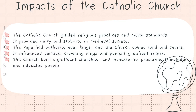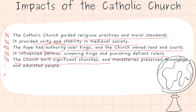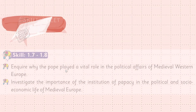The Catholic Church guided religious practice and moral standards, providing unity and stability in medieval society. The Pope had authority over kings, and the church owned land and courts. It influenced politics by crowning kings and punishing defiant rulers. The church also built significant churches and monasteries, preserved knowledge, and educated people.